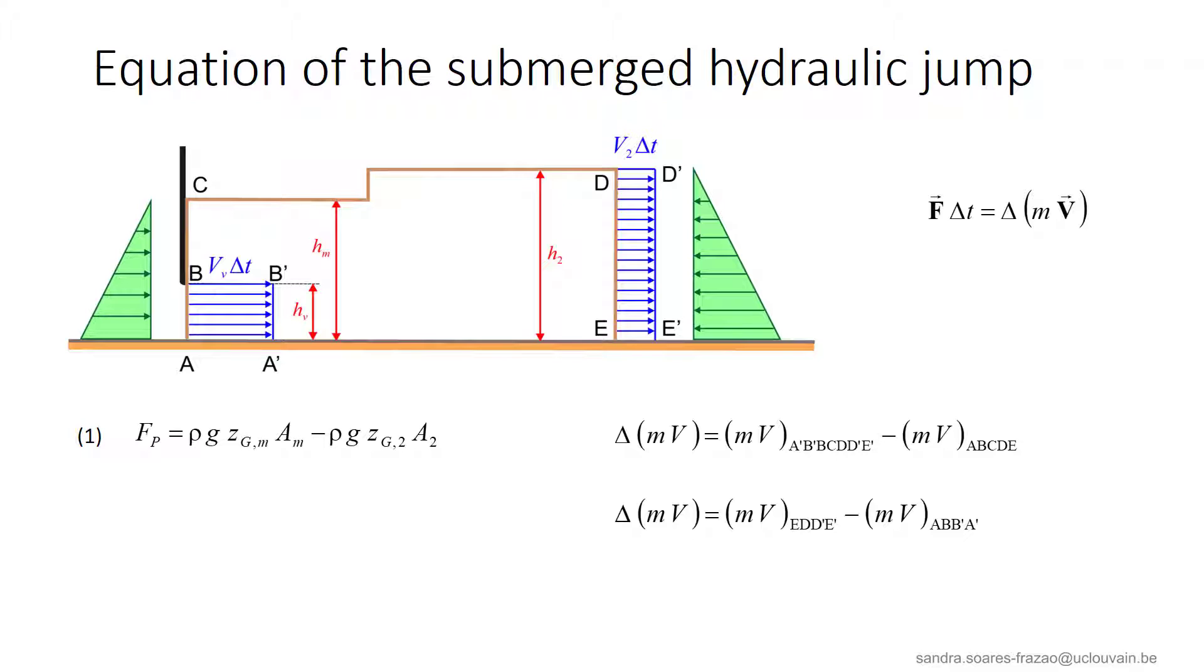For the momentum balance delta MV, we consider the difference between the momentum in the initial volume ABCDE and the momentum in the volume A prime B prime C D prime E prime after delta T.